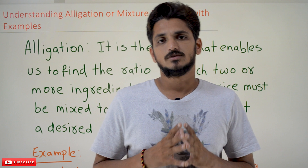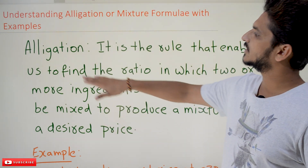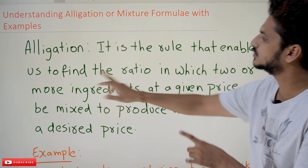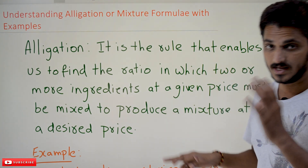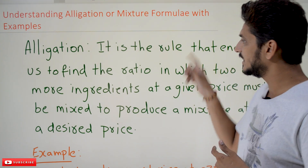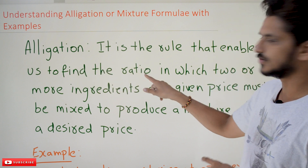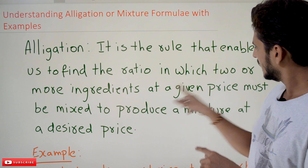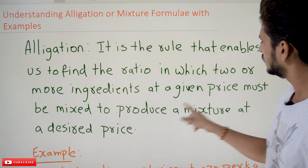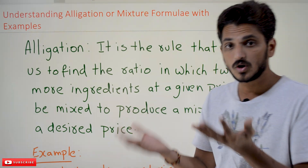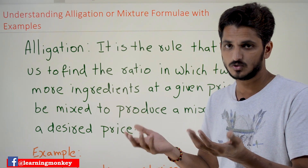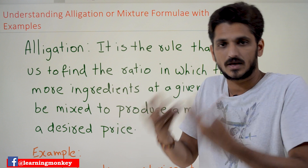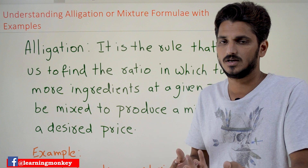Coming to today's class, first we try to understand the definition of allegation. It is the rule that enables us to find the ratio in which two or more ingredients at a given price must be mixed to produce a mixture of a desired price. We are taking two or more ingredients and mixing them to get a mixture of the desired price.